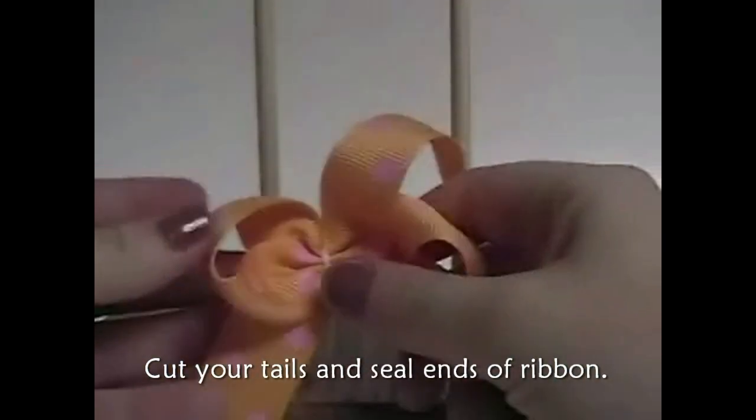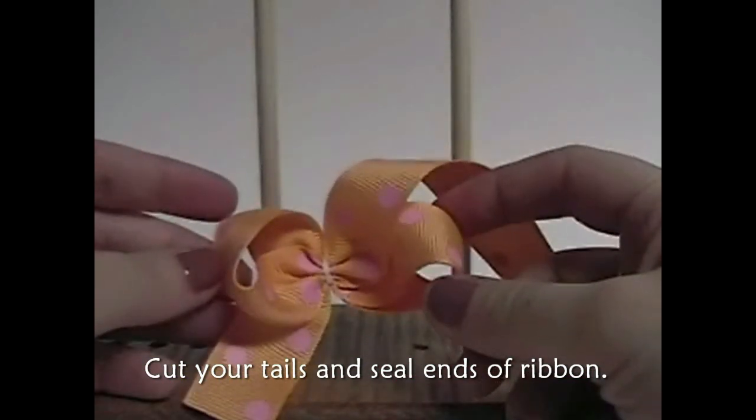Now you can cut your tails, and there you have your two loop topper.